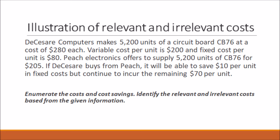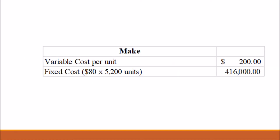Let's first identify what is in the problem. The company wants to determine if it's going to buy or make 5,200 units of the circuit board. For the make decision, the cost of making includes a variable cost per unit of $200 and a total fixed cost of $416,000. We use the total fixed cost because fixed costs remain the same regardless of how many units are produced within the relevant range. Ignore the fixed cost per unit because it changes as the number of units produced changes, but the total fixed cost remains the same — that is why fixed costs are usually considered irrelevant costs.